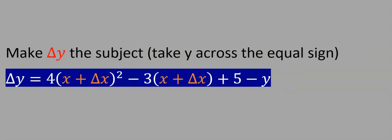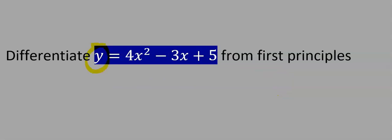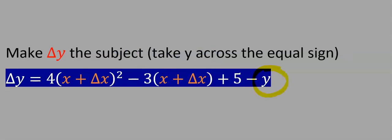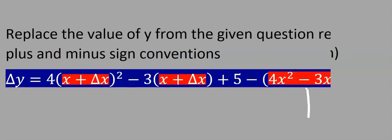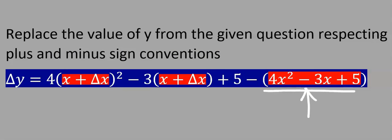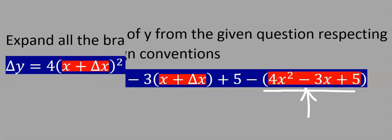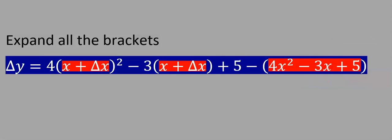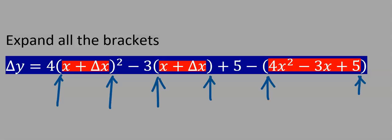Next, go to the question and replace the value of y. From the given question, instead of y I'm going to have 4x² − 3x + 5. Bringing back the value of y from the given question, we now expand the brackets — that is, we remove all these brackets from the function.